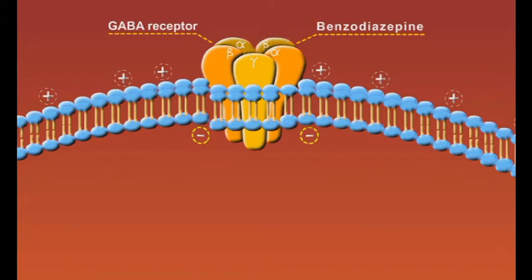When the receptor is empty, the channel is closed and the chloride ions cannot traverse the membrane of the brain cell.